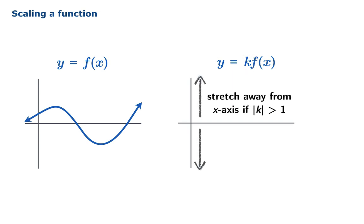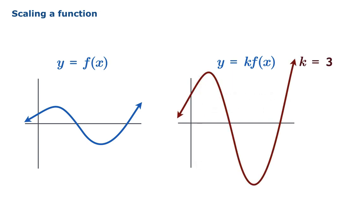If the absolute value of k is greater than 1, then the graph will be stretched away from the x-axis. So for example, here's a picture of what happens when k equals 3.